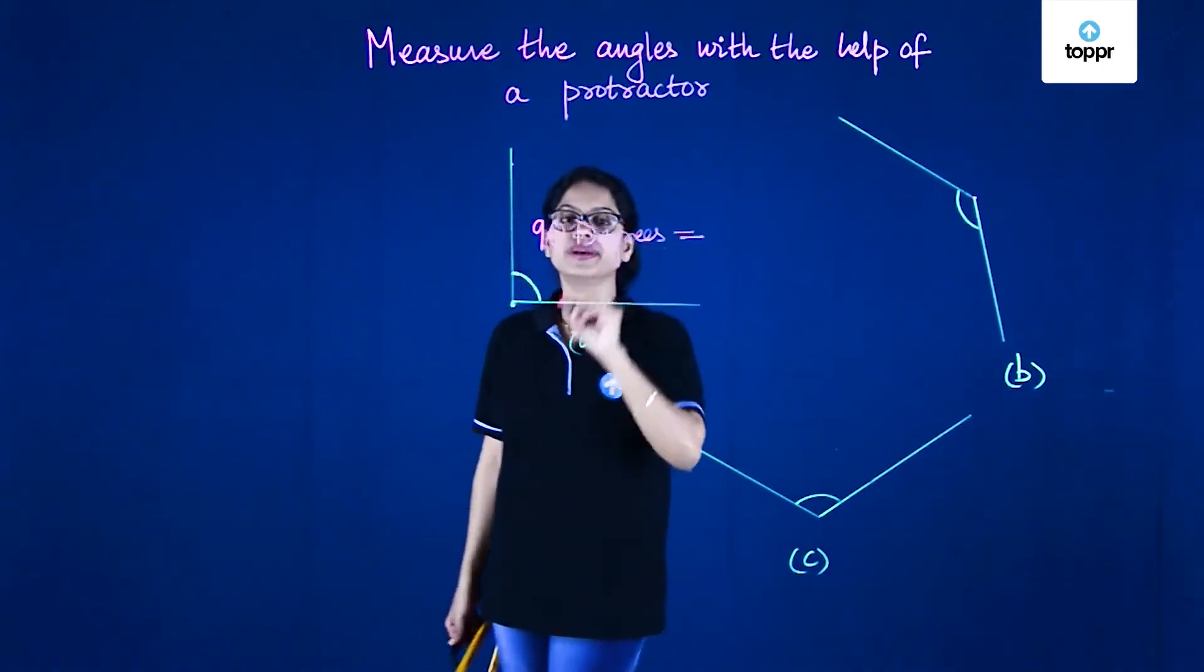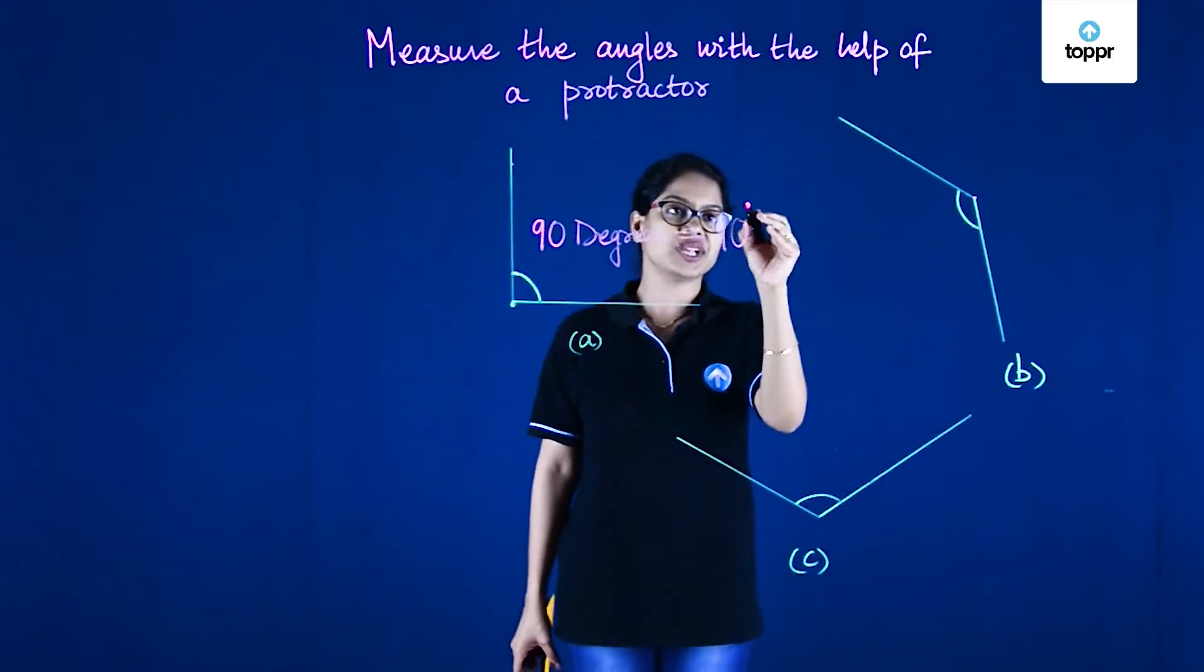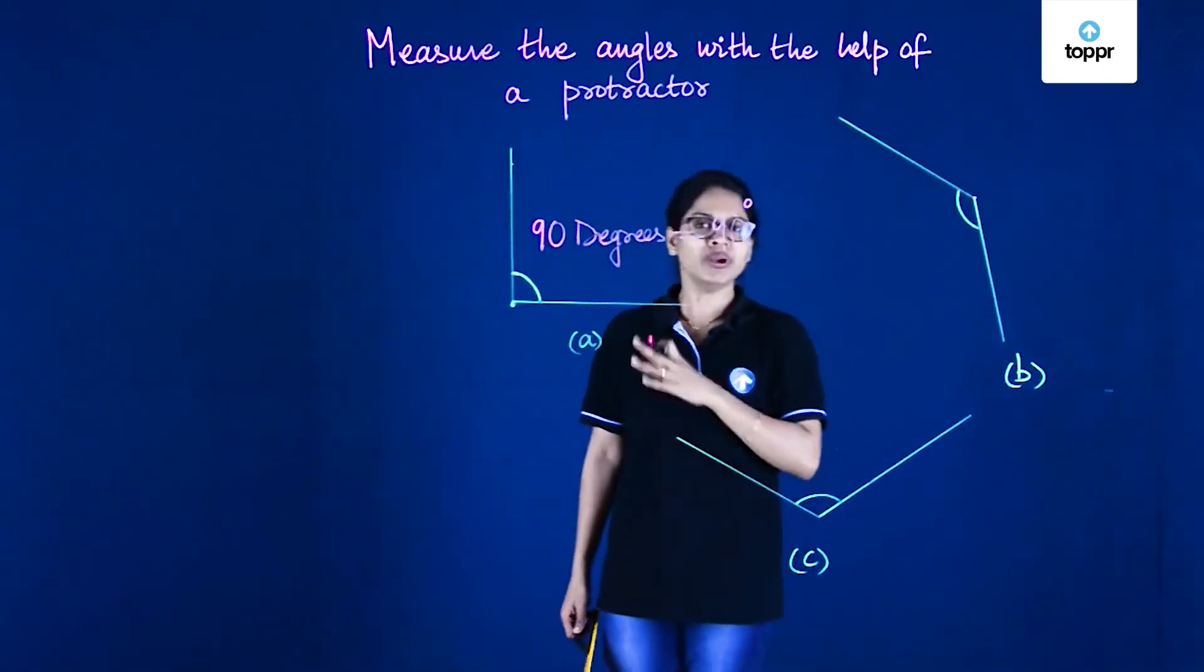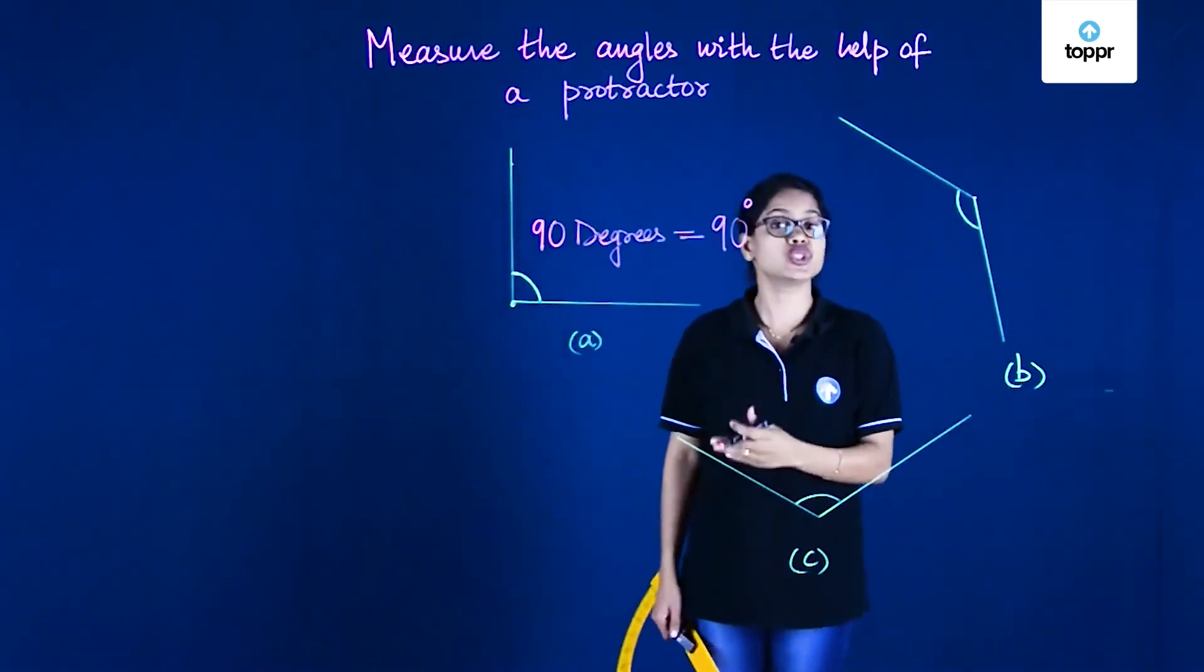We do not want to write degrees every time, so we write it in short as 90° and degree stands for this small circle on the top. Degrees is nothing but a unit in which we measure an angle.